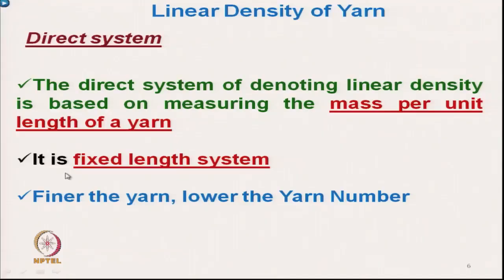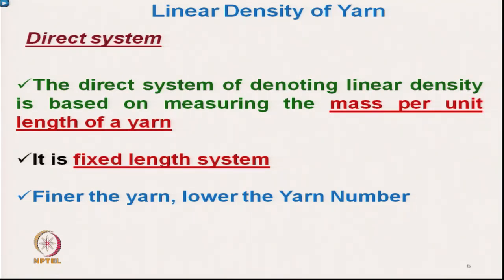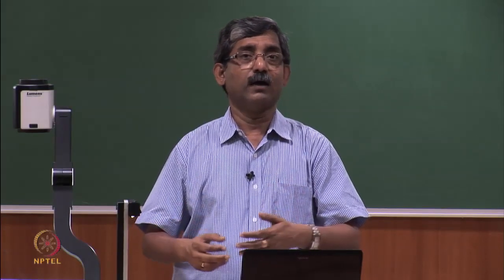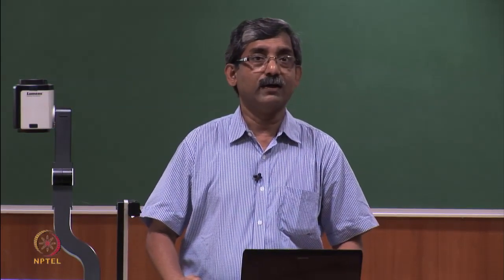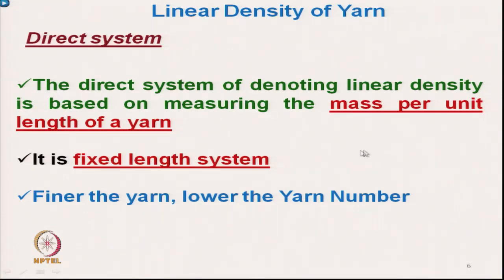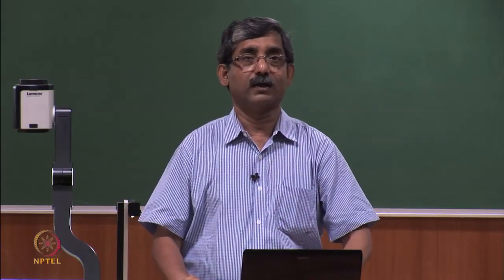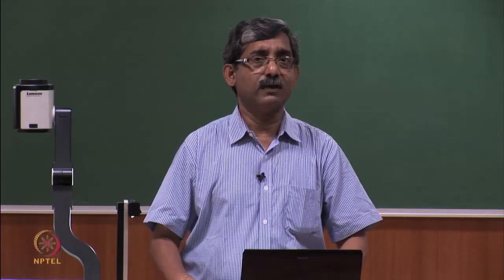In the direct system, if a particular length of yarn gives a lower mass, that yarn will have a lower count. So, finer the yarn, lower is the yarn number. In the direct system, a lower value means a finer yarn and a higher value means a coarser yarn.